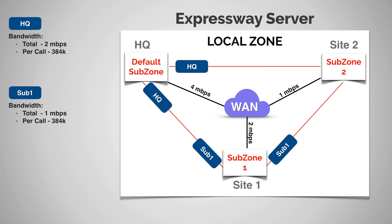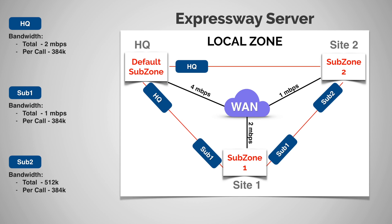We'll do the same thing for subzone two — create a third pipe called sub two. We'll once again set the per call bandwidth to 384k. For the total bandwidth, site two has one meg on the physical connection, so we'll set that to 512k. Then we'll apply the sub two pipe to the links between subzone one and subzone two, and to the link between subzone two and the default subzone.